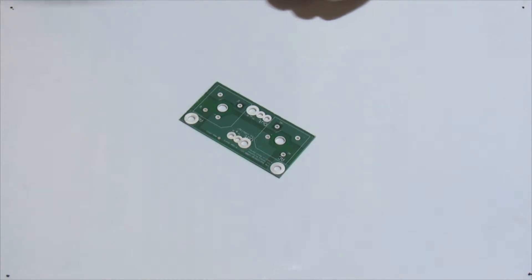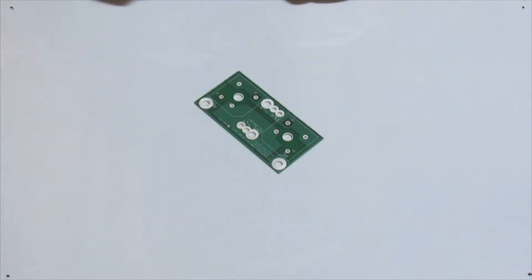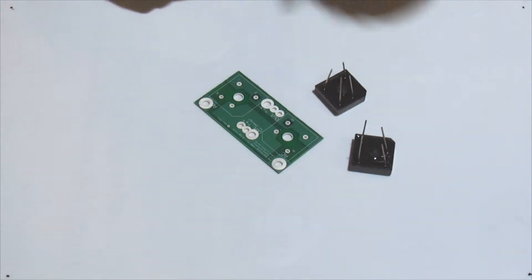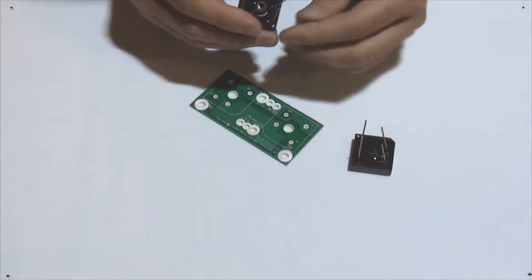Okay, so the next thing we're going to do here is to assemble the diode board. So we're going to get these two bridges that are supplied with your kit, get this board, and put these things in.